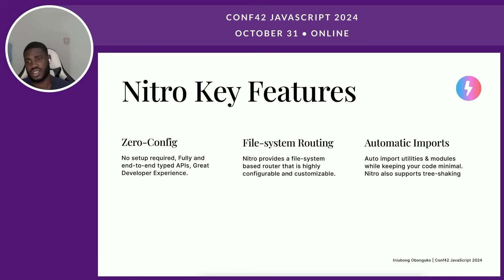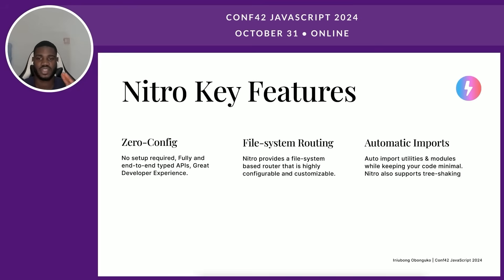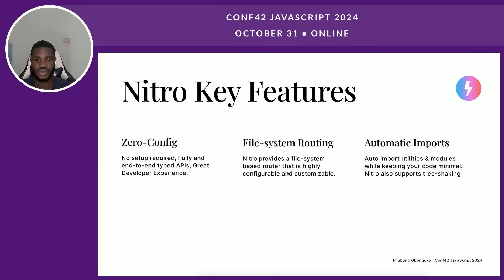Now, some of NitroJS's key features. One is zero config — you can get started with Nitro with just one command. You don't need to set up anything; TypeScript, routing, and hot module reloading all come pre-packed out of the box. Nitro also has file-system routing. To create API routes, all you have to do is create a file in the routes folder and prefix it with the HTTP method, and your routes are ready to go.